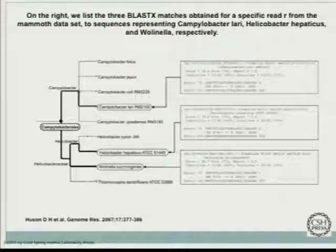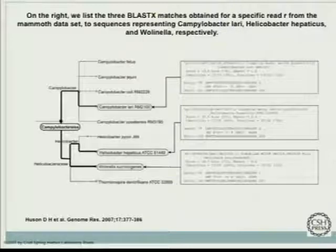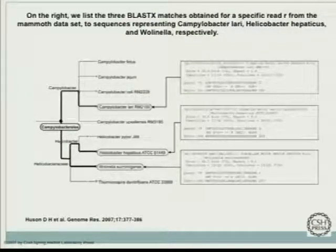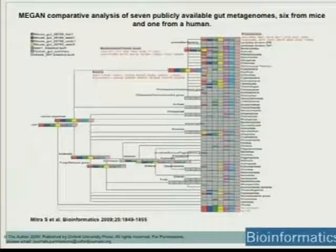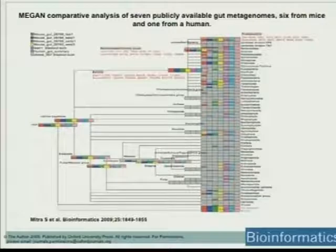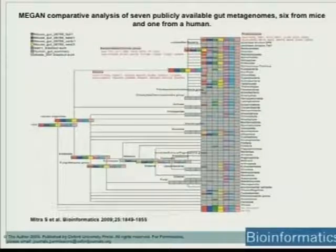MEGAN provides a nice visualization of the differences and commonalities. The lowest common ancestor algorithm works essentially like this: if you have a read that's similar to sequences from three species and all the similarities are significant, you don't really know whether to assign it to one or another. So you just use the common ancestor of those three and use that rank as the taxonomic assignment of the read. You can also do comparison at the function level, including protein families or pathways, for comparison of multiple metagenomes.